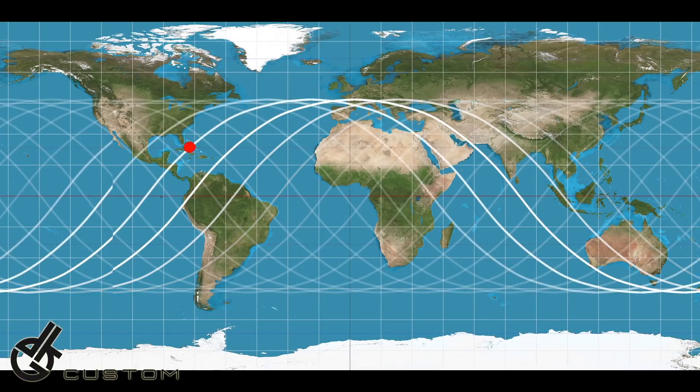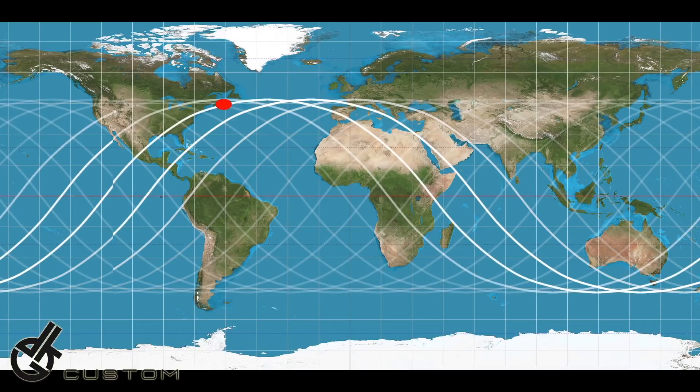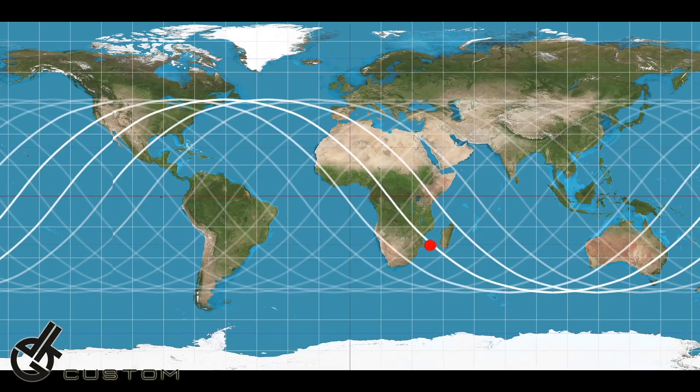Now the reason the ISS travels across the entire earth is not because it's traveling around the globe laterally, it's because the earth is spinning beneath it. If the earth didn't spin, the ISS would appear above the same part of the earth every 90 minutes.